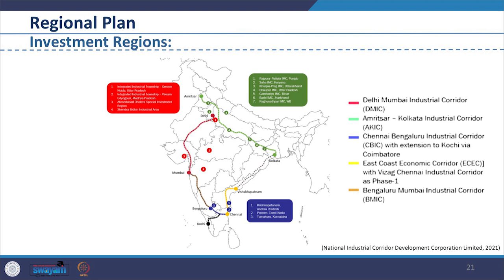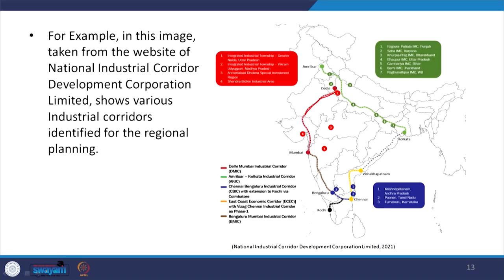We see here the Delhi-Mumbai Industrial Corridor. Likewise, we see Amritsar to Kolkata Industrial Corridor, and also Chennai to Chennai Industrial Corridor. Further, we see the East Coast Economic Corridor which has been planned from Vishakhapatnam, and also the Bangalore to Mumbai Industrial Corridor. These industrial corridors pass through various states and therefore become one kind of a region for which a regional plan is developed.